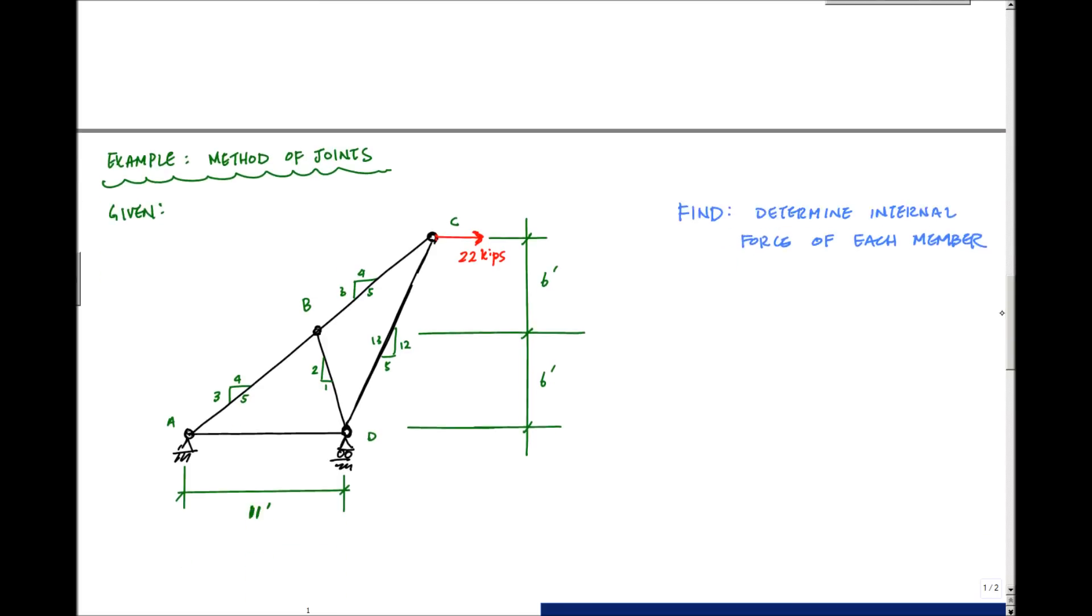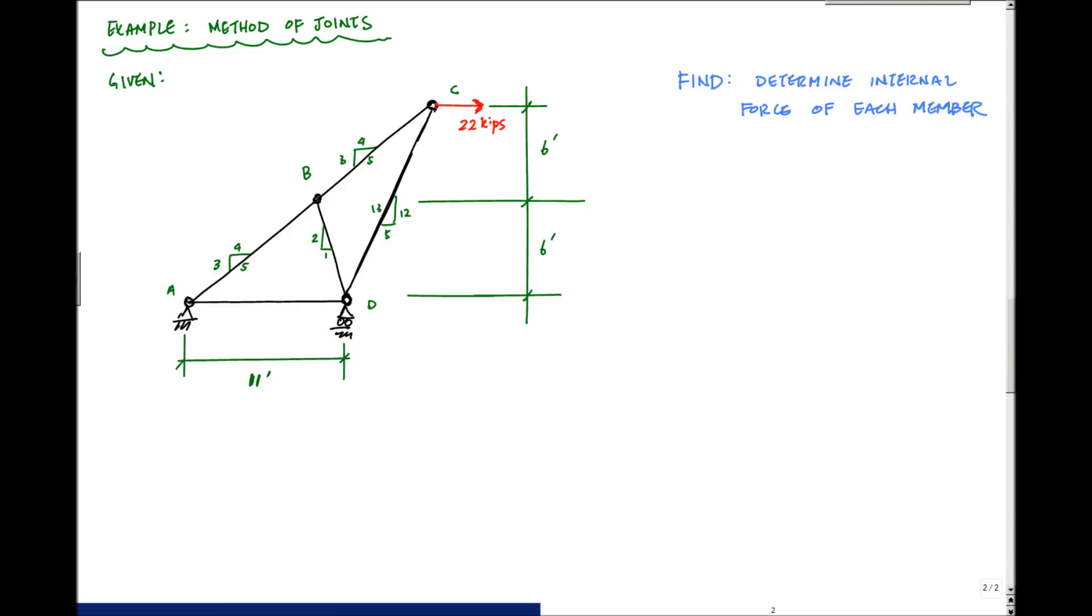So let's do an example problem using method of joints. I have this truss here. This is A, B, C, D. Each is a joint. I've got 11 feet from A to D. The vertical distance between B and C is 6 feet. The vertical distance between B and D is 6 feet. I have a concentrated force or load horizontal of 22 kips at joint C here. And I want to draw in my diagram here I have an unknown AY, AX for my reactions, and then here I have DY for my reactions.